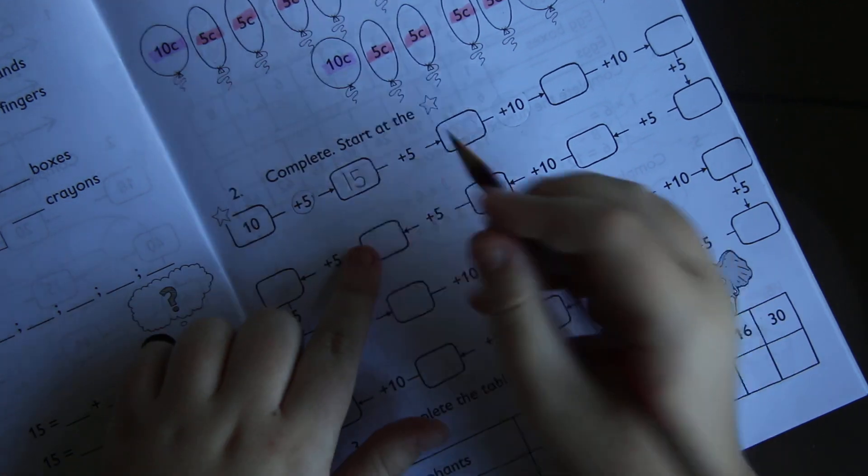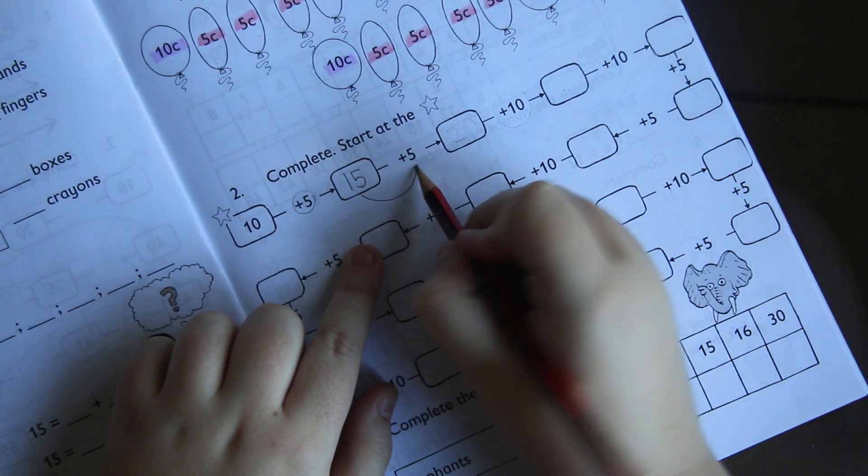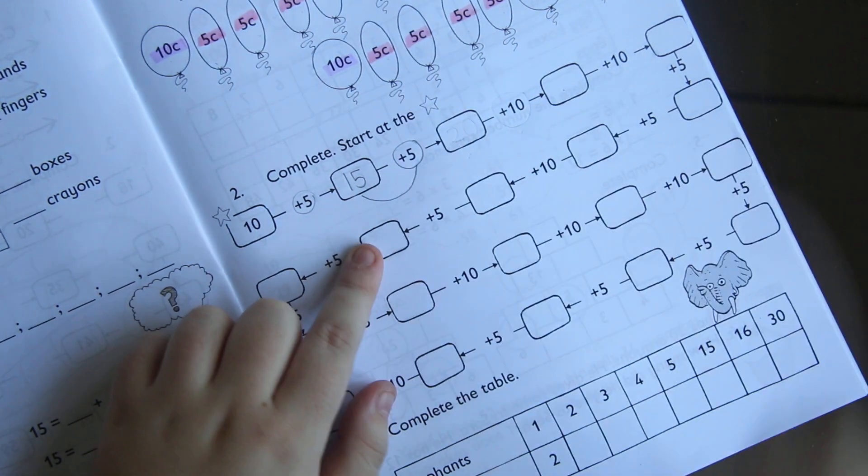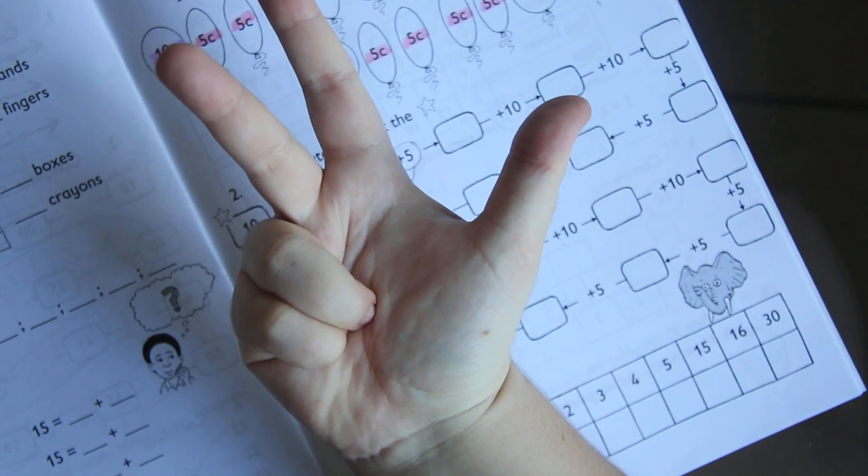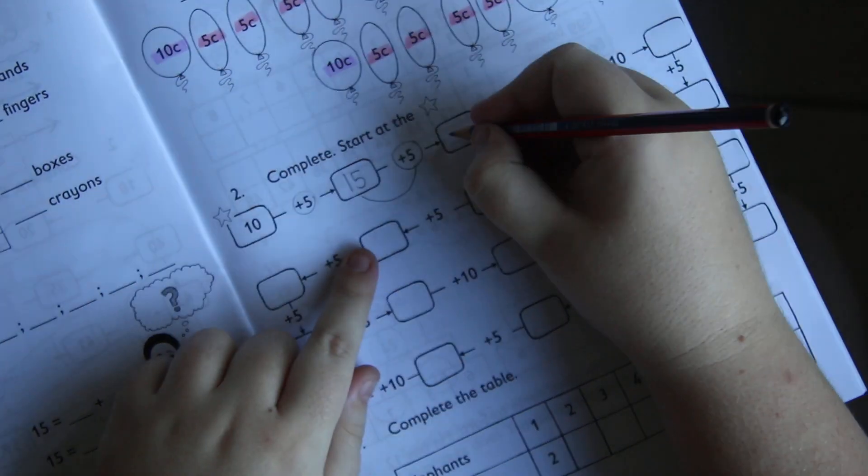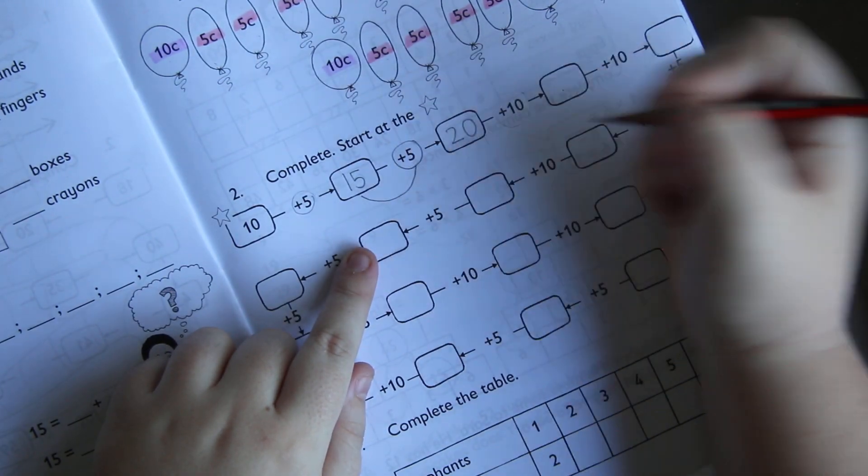Now what is 15 plus 5? 16, 17, 18, 19, 20. 15 plus 5 is 20.